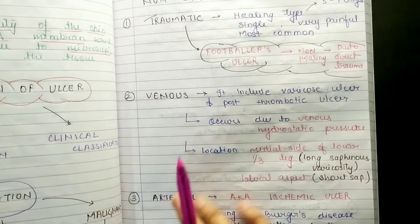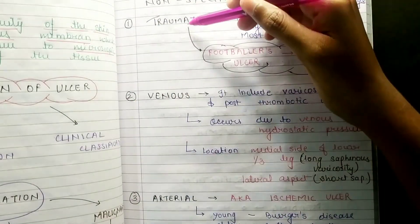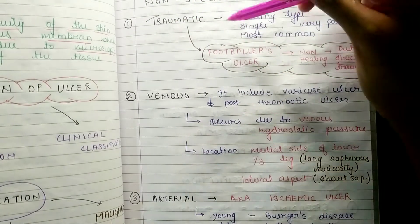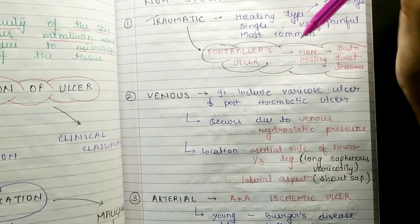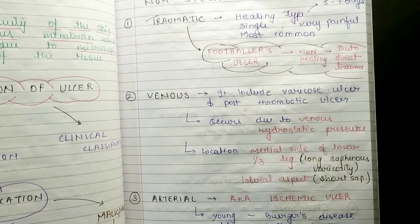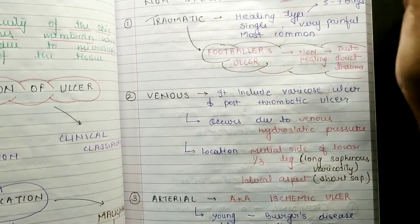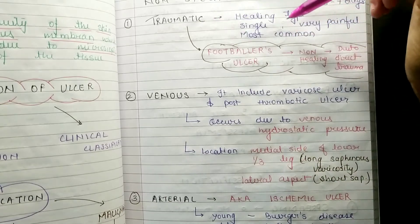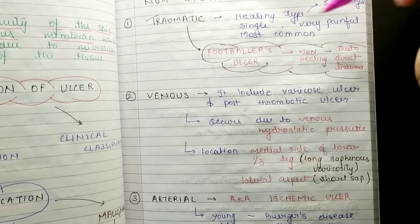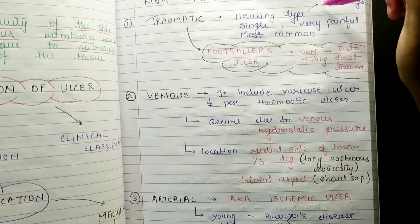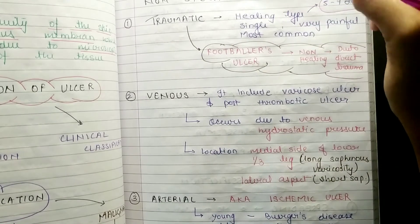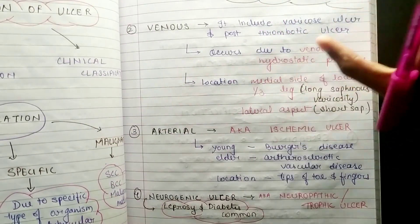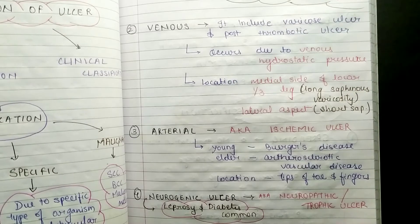The first non-specific type is traumatic ulcer. You can understand from the name itself — traumatic is a healing type. It is single, can be very painful, and it is the most common. It heals in five to seven days. It is also called footballer's ulcer.